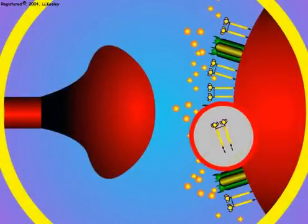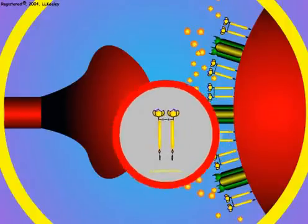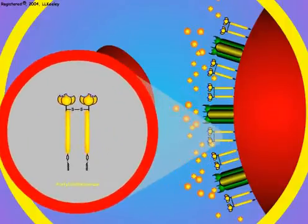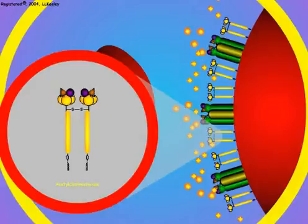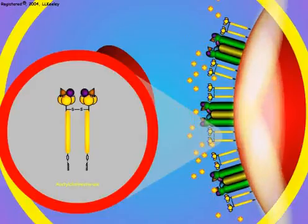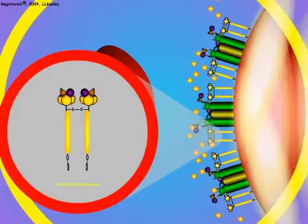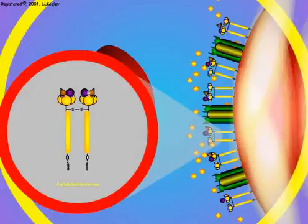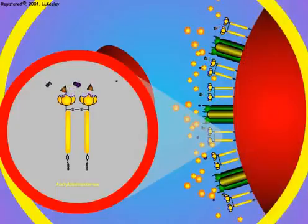Acetylcholinesterase degrades acetylcholine, the neurotransmitter chemical that stimulates sodium channel opening at a synapse or a neuromuscular junction. Here we see the normal action of acetylcholinesterase to degrade acetylcholine.